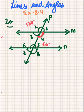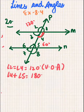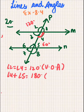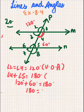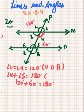Since angle 4 plus angle 5 equals 180 degrees, these are co-interior angles and their sum is 180, which proves that M is parallel to N. So 180 equals 180 degrees, confirming the supplementary co-interior angle condition.